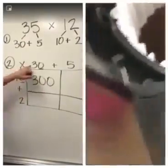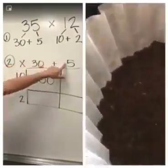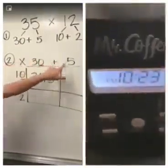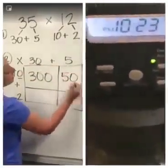We did 10 times this, 10 times that. 10 times 5 is 50, so it goes in the first box.